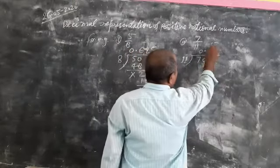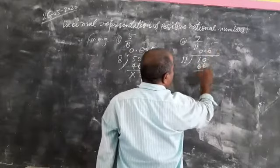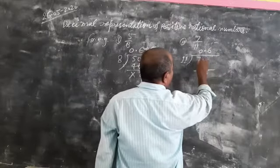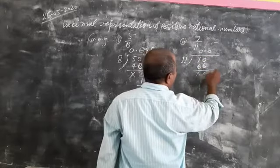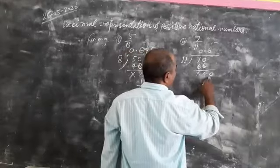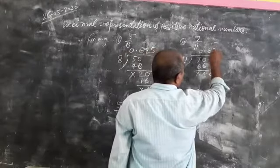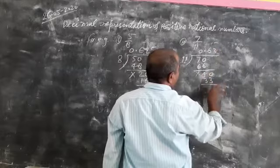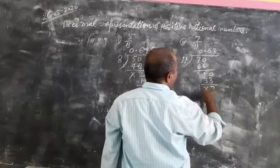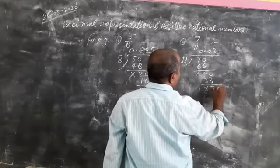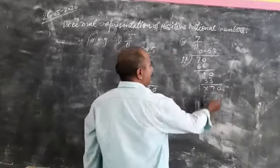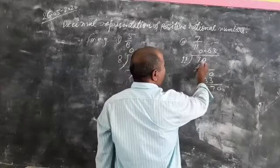Now 10 minus 6 is 4, and 6 minus 6 is nothing. Increase one more 0 over 4. It will be 40. So 11 times 3 is equal to 33. And 10 minus 3 is equal to 7, 3 minus 3 is nothing. You will increase one more 0 over 7, it will be 70. It just comes in the first form. The first form is 70.